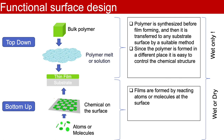There are basically two main types of surface coating techniques: the top-down approach and the bottom-up approach. In the top-down techniques, polymer solution is firstly prepared before it is transferred to any substrate surface by a suitable method. Since the polymer is formed in a different place, it is easier to control its chemical structure. For the bottom-up techniques, on the other hand, films are formed on the substrate surface by reacting it with atoms or molecules.